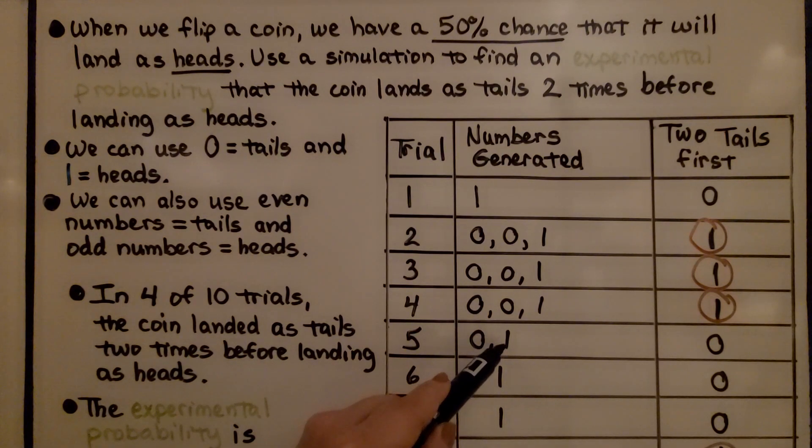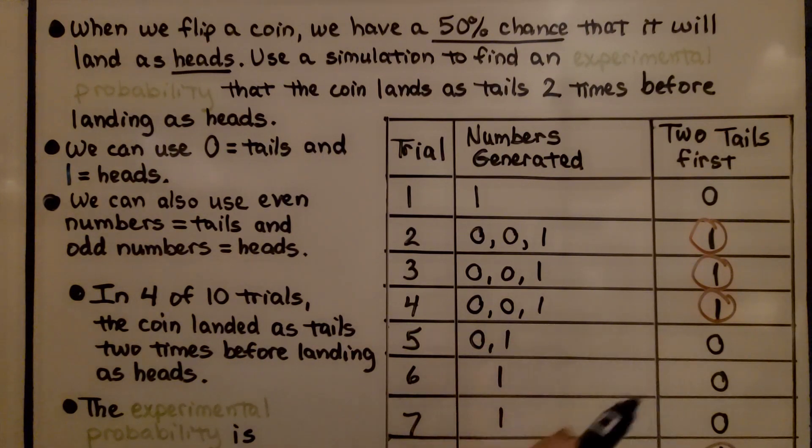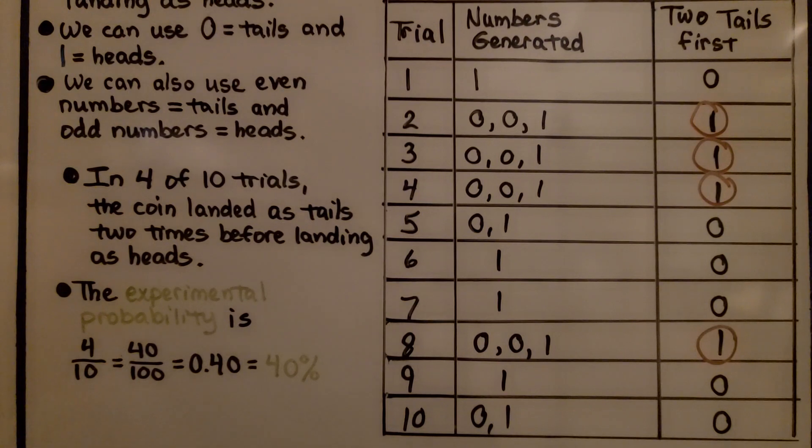Then I got a 0, 1. That's not 2 zeros and a 1. So, that was a 0. Then I got a 1 that didn't work. I got another 1 that didn't work. Then on my 8th trial, I got 2 zeros and a 1 again. So, I put a 1 here.